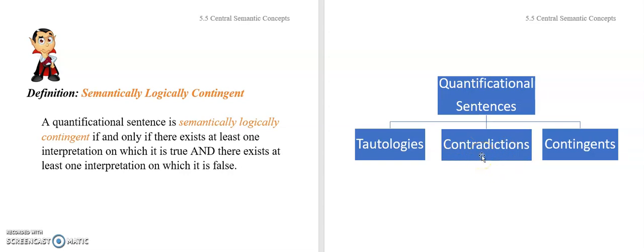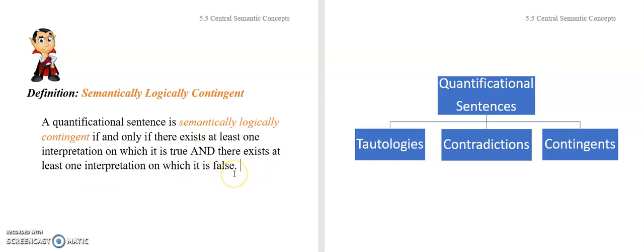Really quick question: do you think it's possible to prove that a sentence is not a logical contingent? Pause and think about that. It's not going to be possible to prove that a sentence is not logically contingent. Since these are mutually exclusive and exhaustive categories, if it's not contingent it's one of the other two — but we've already seen you cannot prove that a sentence is a tautology or a contradiction. So you cannot prove a sentence is not semantically logically contingent, but you can prove that it is contingent by providing one true and one false interpretation.